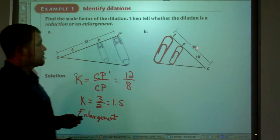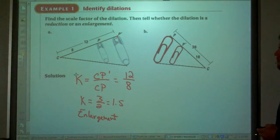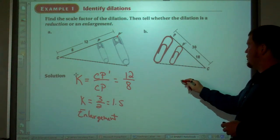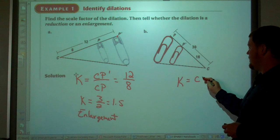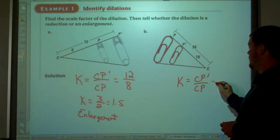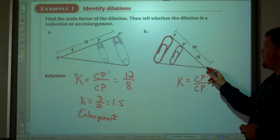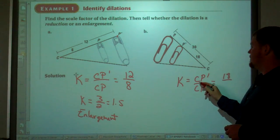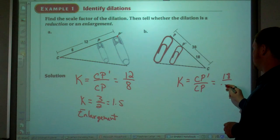This problem here. So K equals C to P prime divided by CP. C to P prime is 18. C to P is 30.